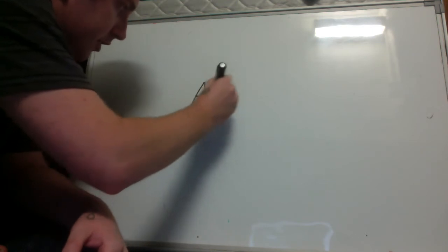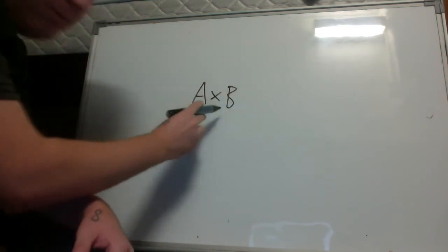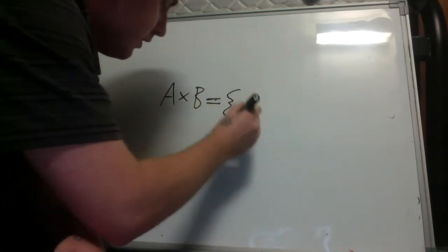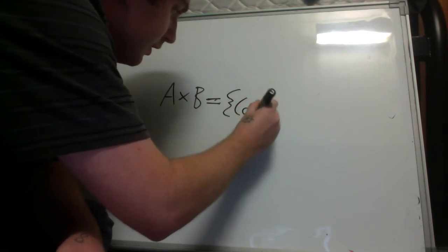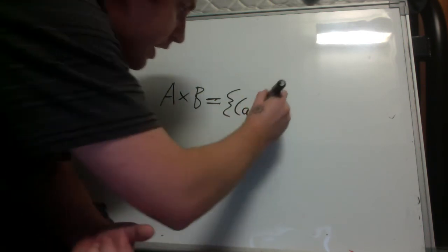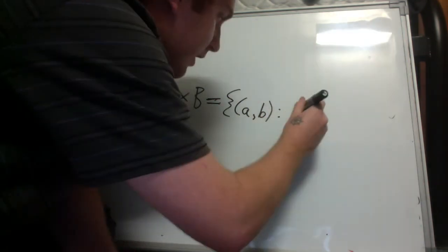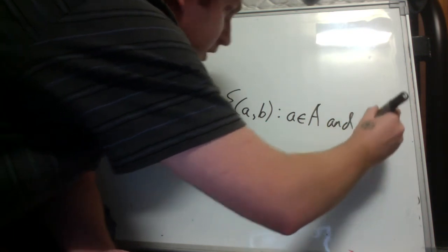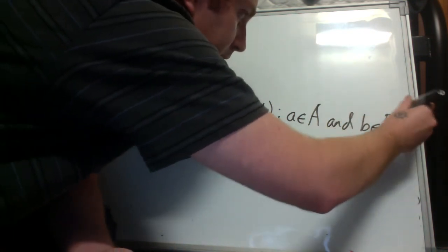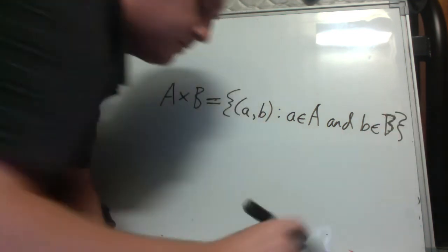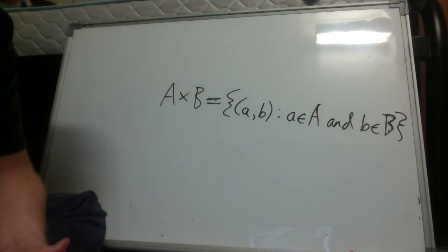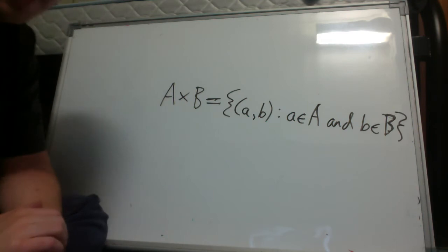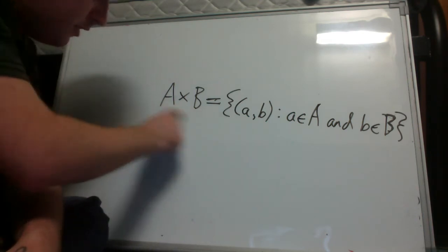So Cartesian product we can denote by set builder notation again. A cross b, the Cartesian product of a and b, is the set of all ordered pairs of little a little b such that a little a is an element of big a and little b is an element of big b. This is the condition that this ordered pair must satisfy in order to be an element of the Cartesian product.